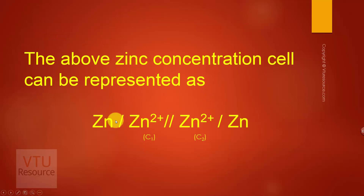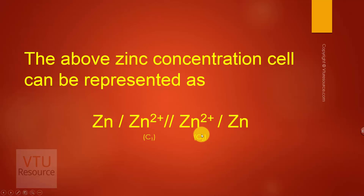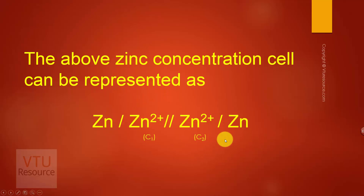The zinc concentration cell can be represented as: Zn | Zn²⁺ (C1) || Zn²⁺ (C2) | Zn. If the concentrations are not represented, this does not form a concentration cell — the concentrations are a must.